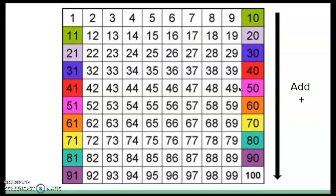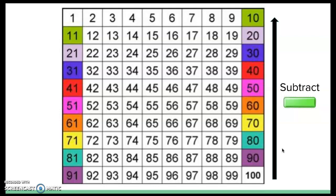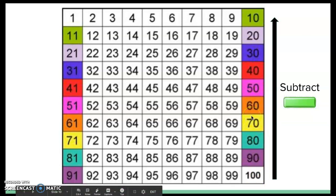When using a hundreds chart, numbers get bigger as you go down. So when we want to add, we go down the hundreds chart. But when we want to subtract using a hundreds chart, we go the opposite direction — we start at the bottom and move up, because when we go up the hundreds chart the numbers get smaller. And we know when we subtract we take away, so the answer or difference is going to be smaller.